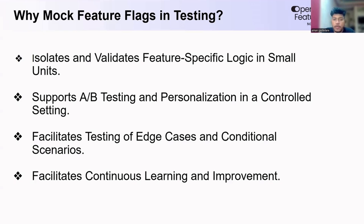Feature Flags support A/B testing and personalization. It helps you create and test variations for user-specific groups, allowing you to compare results and personalize the experience — for example, testing for normal users and premium users. It also facilitates testing of edge cases and conditional scenarios, allowing you to easily test all possible scenarios, even rare cases, by toggling features on or off. Feature flags facilitate continuous learning and improvement.